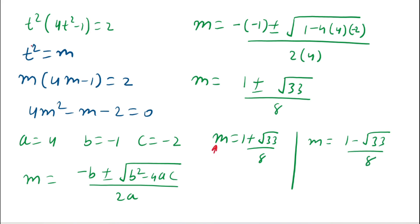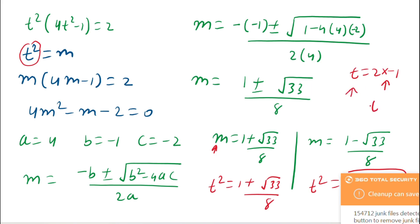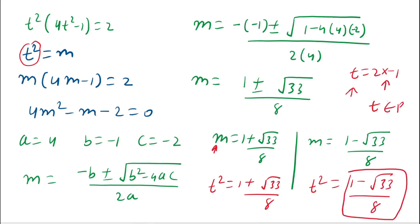Since t = 2x - 1 and x is real, t is real, so t² must always be non-negative. But (1 - √33)/8 is negative (since √33 > 1), so this case is rejected. Therefore, only t² = (1 + √33)/8 is accepted.